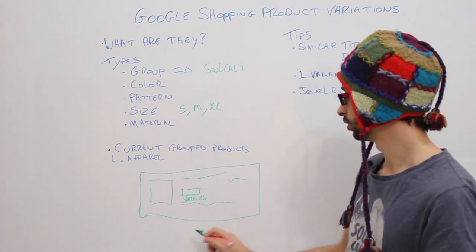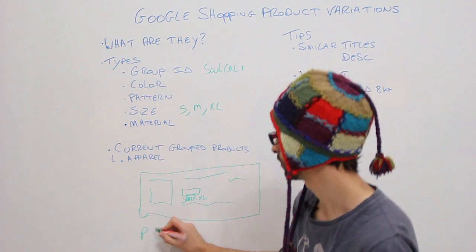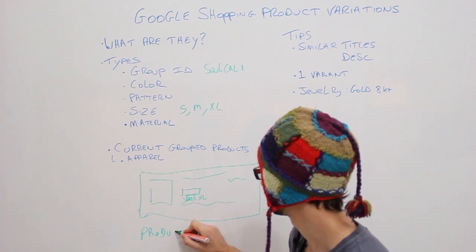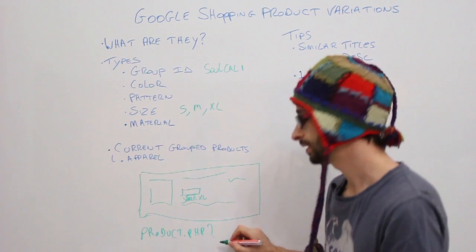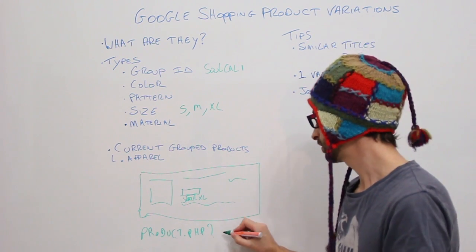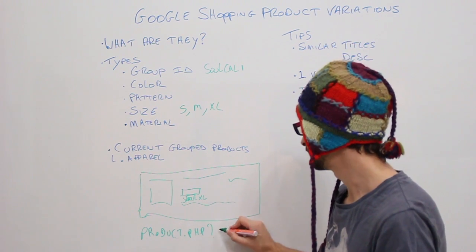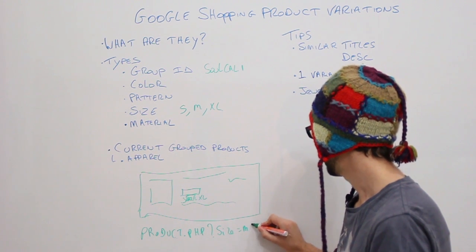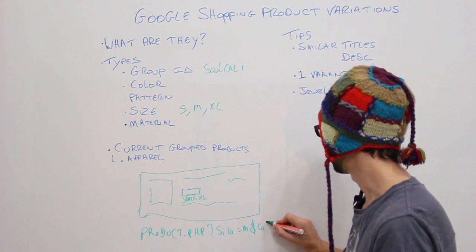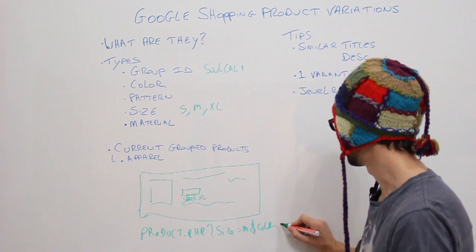If we have a normal query string, let's say product.php, then we need to add a query. This query in this case, for example medium, so size is M and color is for example blue.